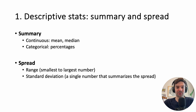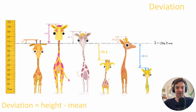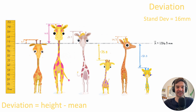There are other ways to report spread. Standard deviation is a single number that summarizes the spread, and it's most often reported with the mean. You calculate the deviation based on how much each individual giraffe's height differs from the mean of 106 millimeters, subtract them all from the mean, do some math, and you get the standard deviation — here it's 16 millimeters.